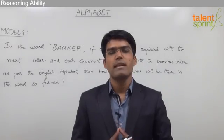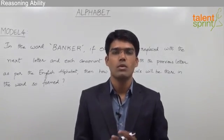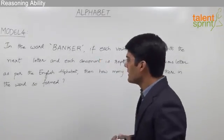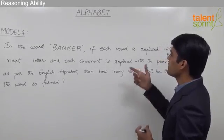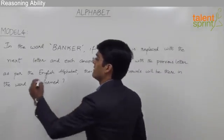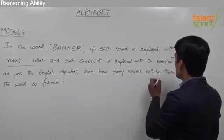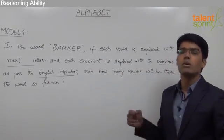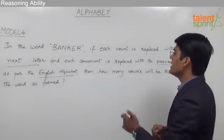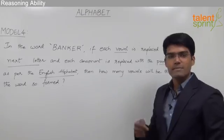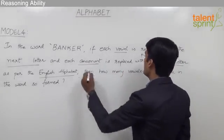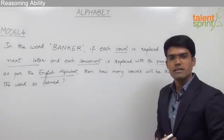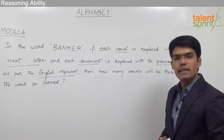Let us now take the fourth model from alphabet where we are supposed to replace the letters of the given word and find out the number of vowels or consonants in the new word formed. The question here is: in the word 'banker', if each vowel is replaced with the next letter and each consonant is replaced with the previous letter as per the English alphabet, then how many vowels will be there in the word so formed?